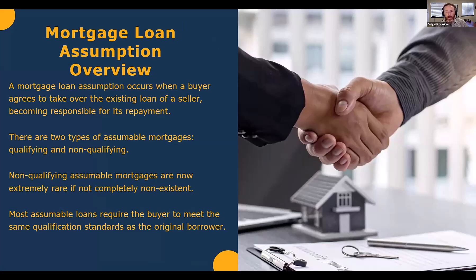A mortgage loan assumption occurs when a buyer agrees to take over the existing loan of a seller, becoming responsible for its repayment. The two types of loan assumptions are qualifying and non-qualifying. However, most non-qualifying assumptions are gone — they were common in the late 1980s and early 1990s, but by the late 1980s the government had taken that ability away and made them all qualifying. The buyer has to qualify to the same standard the existing homeowner had to qualify to.